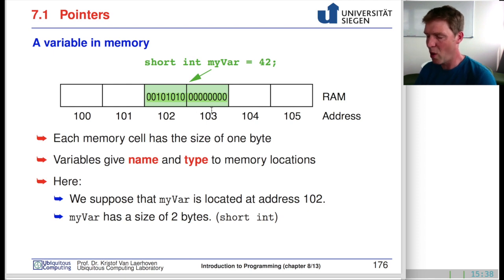With these zeros and ones, we can say this is the number 42. This number is put in there and it's held in two bytes, and that's because a short integer is stored in two bytes, so these two memory addresses.